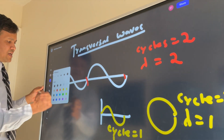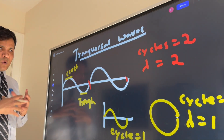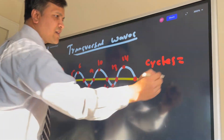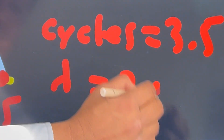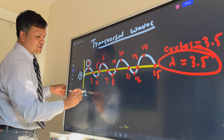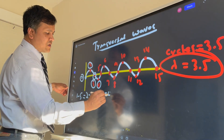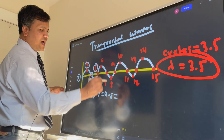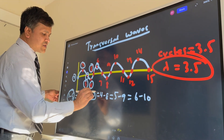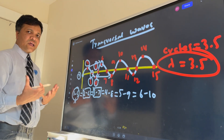Now a few things to understand about transverse waves. We call this the crest and this one the trough. Now let's understand the wavelength — how can we calculate it? One cycle, two cycles, three cycles, three and a half — so 3.5 wavelengths. For example, 1 to 5 is a wavelength, 2 to 6 is a wavelength, 3 to 7, 4 to 8, 5 to 9, 6 to 10 — you get the idea. So crest to crest is a wavelength, trough to trough is a wavelength, or any successive point to the next successive point is a wavelength.